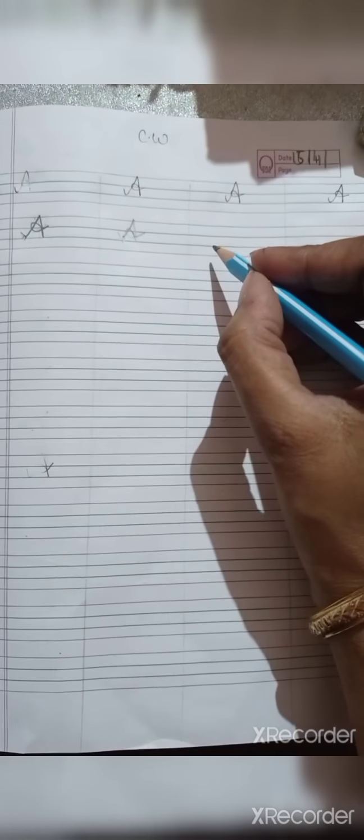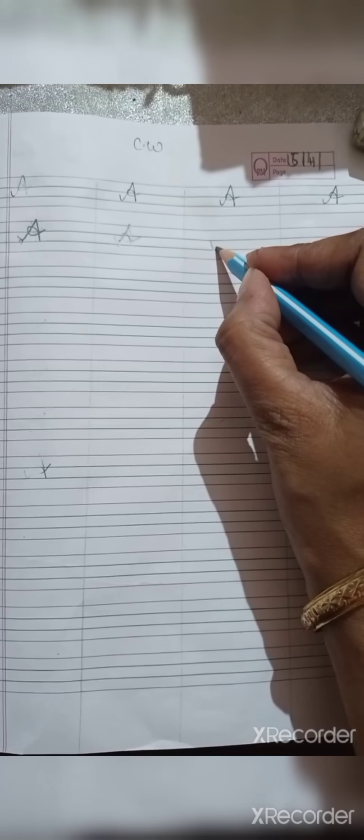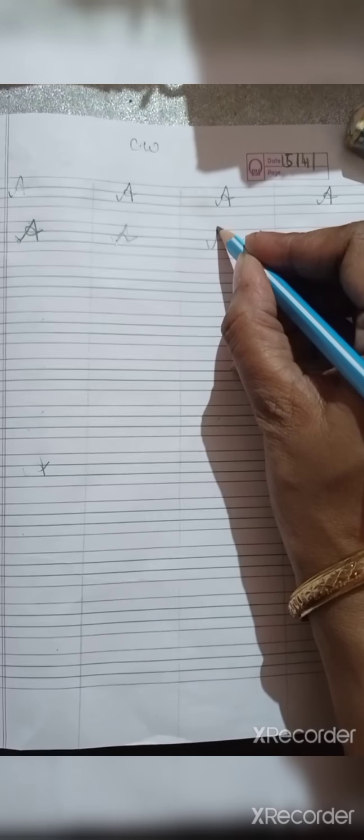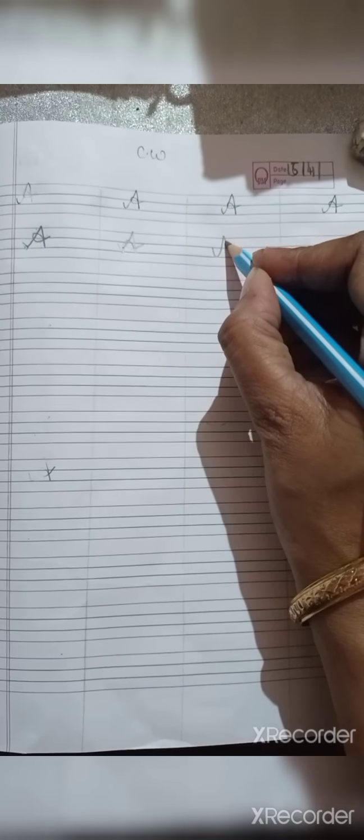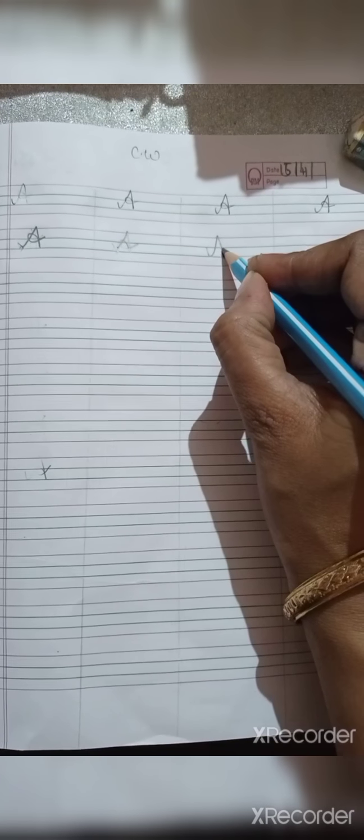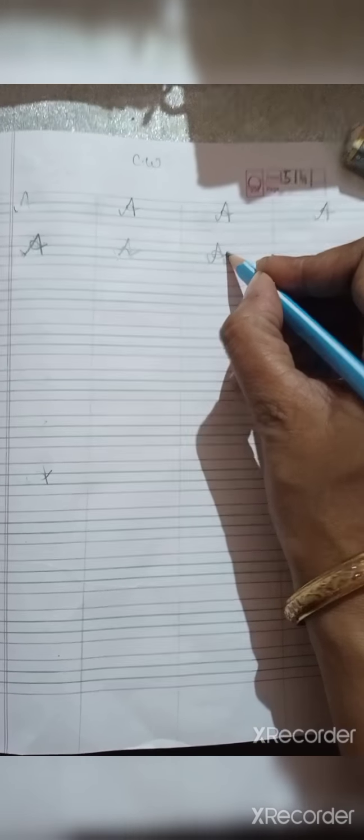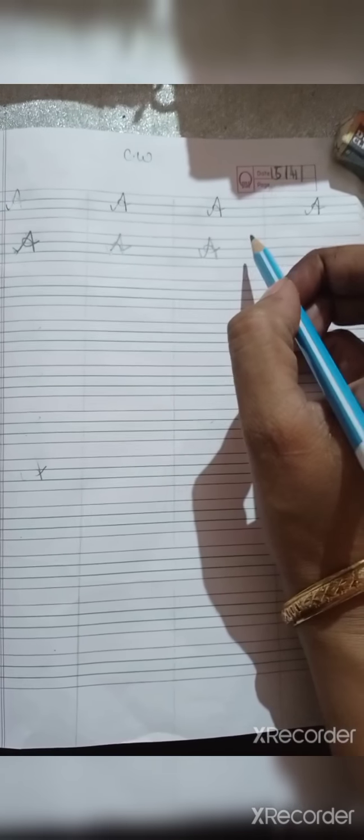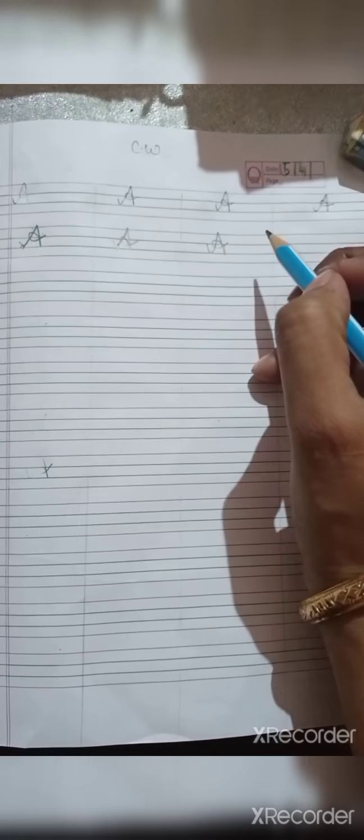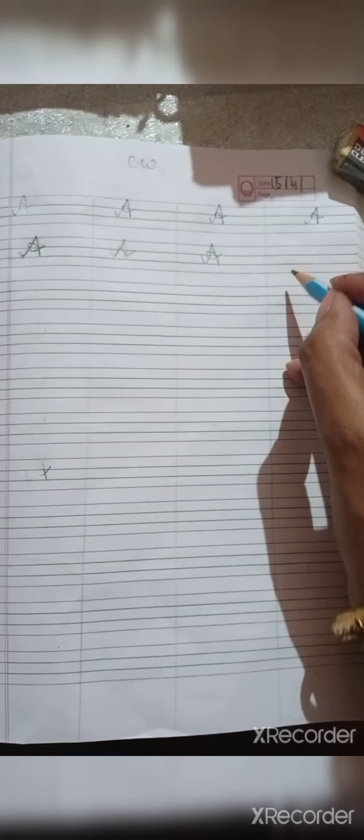Okay, make a curve, go up, come down. Turn, अंदर की तरफ टर्न करना है. बिल्कुल complete करने के बाद ही आपको pencil उपर करनी है. Okay students.